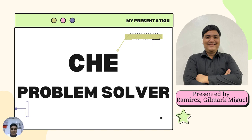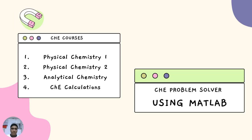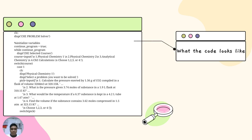In order to answer the CHE related courses or problems in the areas of Physical Chemistry 1, Physical Chemistry 2, Analytical Chemistry, and CHE Calculations, I developed a tool called CHE Problem Solver using MATLAB. This is the section that welcomes the user and lets them choose from four CHE courses, after which it will immediately pose four questions.